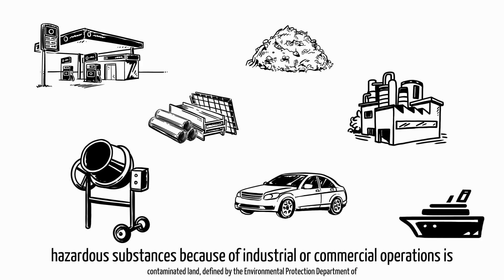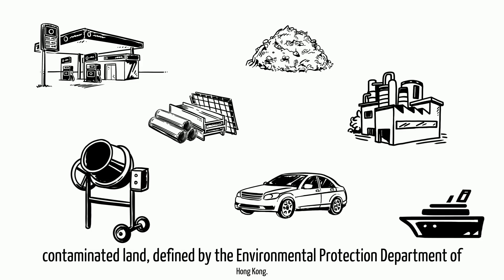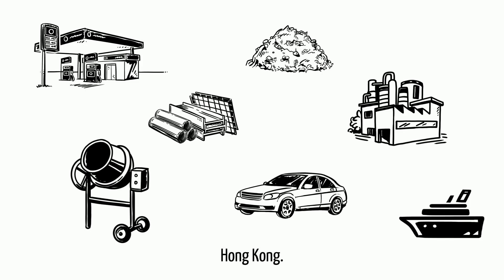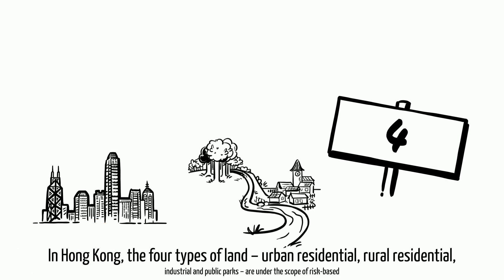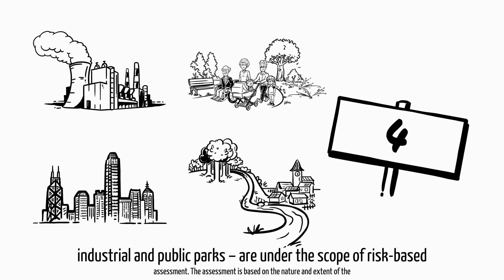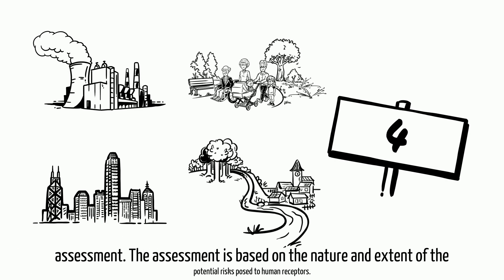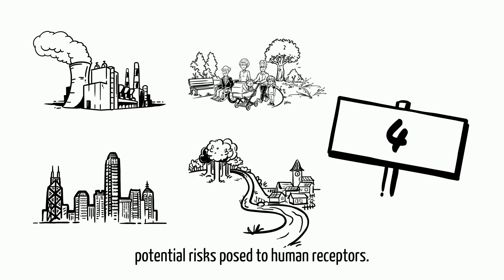Land polluted by hazardous substances because of industrial or commercial operations is contaminated land, as defined by the Environmental Protection Department of Hong Kong. In Hong Kong, the four types of land — urban residential, rural residential, industrial, and public parks — are under the scope of risk-based assessment. The assessment is based on the nature and extent of the potential risks posed to human receptors.